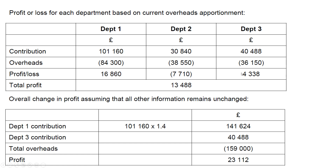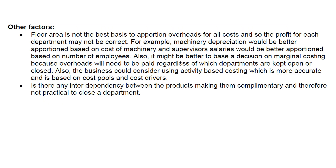It might be that Department 2 makes a small profit and Department 3 ends up making a loss. The things to remember are that overheads don't just disappear — even if we shut a department down, our overheads wouldn't just vanish. Things like rent and supervisors' salaries are unlikely to reduce to any great extent just because we close a department down. The only thing we might lose is perhaps some depreciation if we get rid of machinery from the closed department. The mark scheme noted that floor area is not the best basis to apportion overheads for all costs, so the profit for each department may not be correct. For example, machinery depreciation would be better apportioned on cost of machinery, and supervisors' salaries on the number of employees in each department.